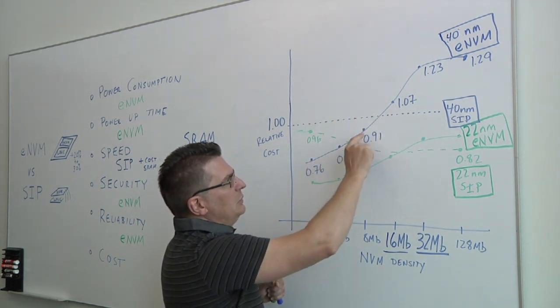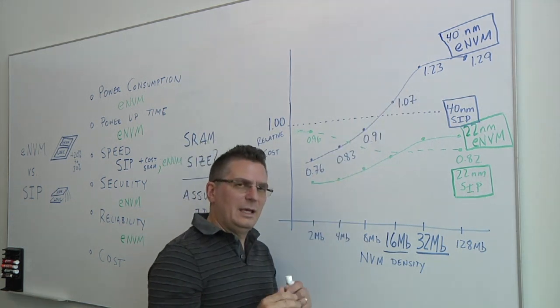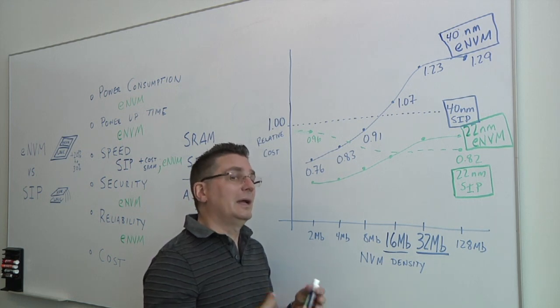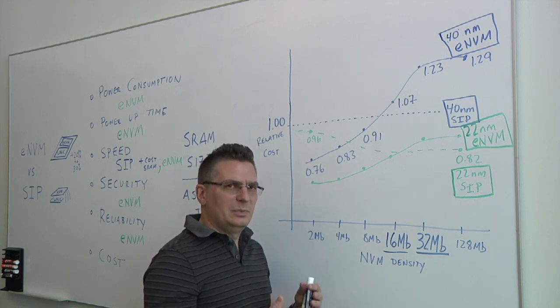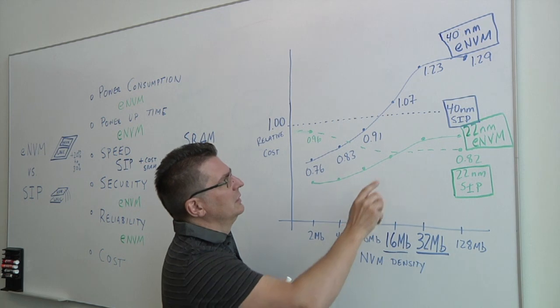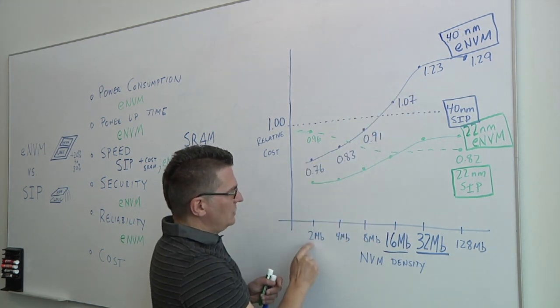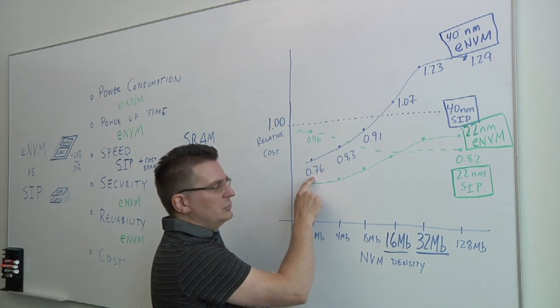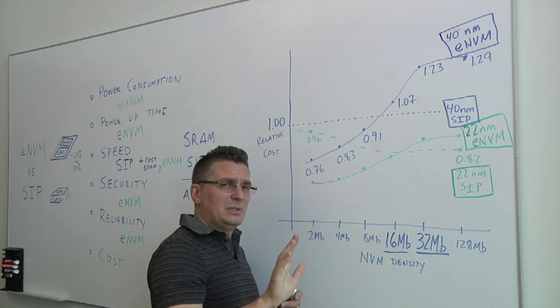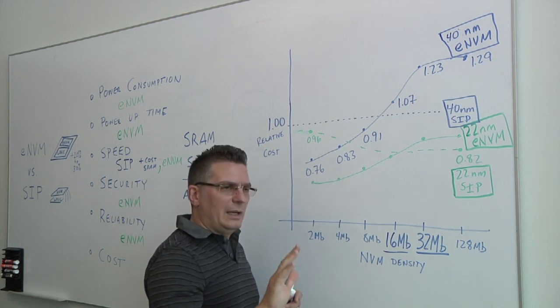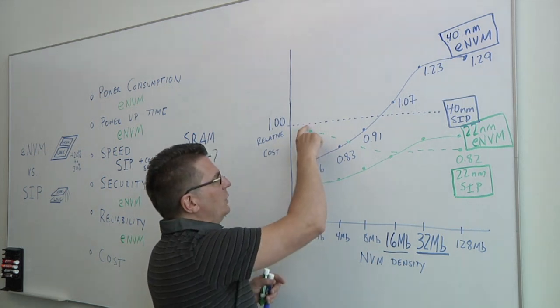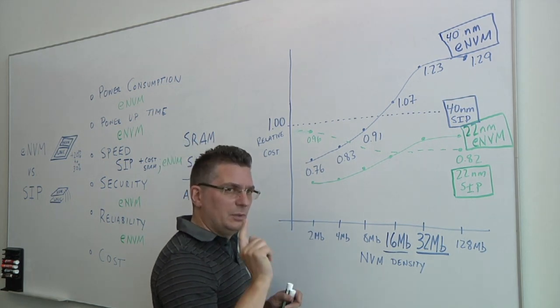And then what we've done is the blue line here for 40 nanometer. And 40 nanometer now is the most popular process ramping for 32-bit MCUs, which is the highest volume MCU business these days. And the one we see being widely used for IoT and automotive electronics. So with an embedded NVM, at 2 megabits, we start at about a 25% lower cost than SIP. And that may be a surprise to people. But I think once you add up the size and the extra packaging and all of that, that's where there's quite a difference. And SIP is not the lowest cost solution embedded is.